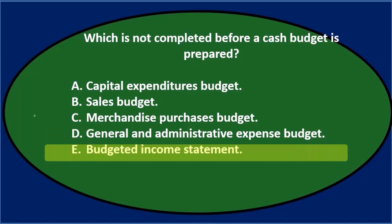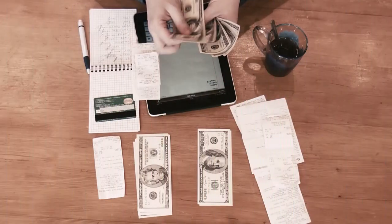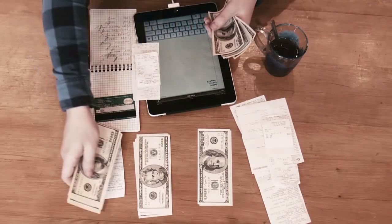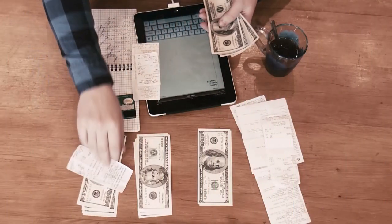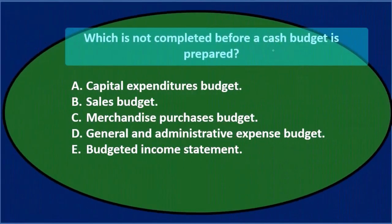Let's go through this again using the process of elimination. Which is not completed before a cash budget is prepared? We have to think about the order in which we do the budgets. We do them in a systematic sequence so nothing gets out of order. The cash budget is near the end — in the lower third of the budgeting process — so we have to do a lot of other budgets before it typically.